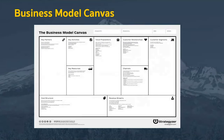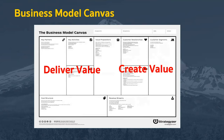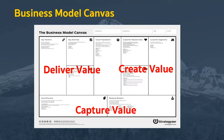The business model canvas has eight building blocks. On the right side are the customer segments, the customer relationships, and the channels — the building blocks that create value for the customer. On the left side, we have the building blocks that deliver value: key partnerships, key activities, and key resources. And lastly, we have the building blocks that capture value — the cost structures and the revenue streams.